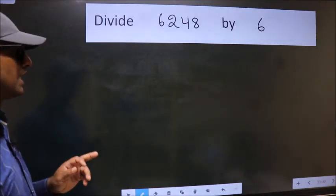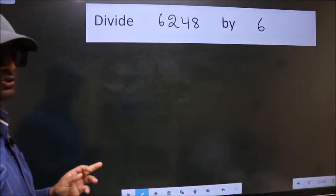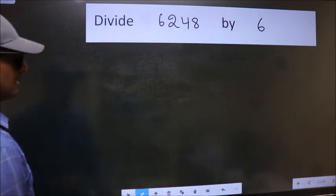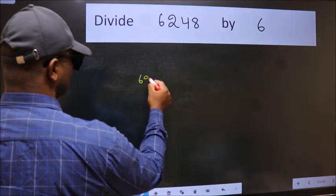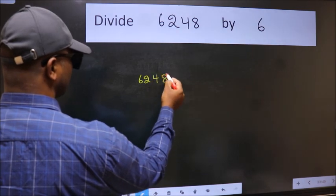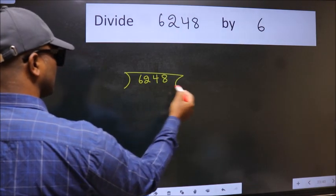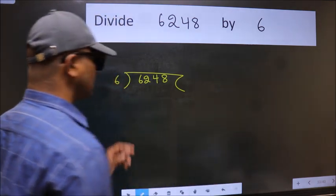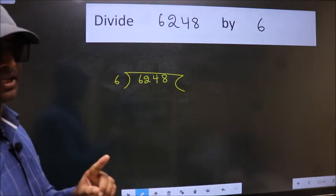Divide 6248 by 6. To do this division, we should frame it in this way. 6248 here, 6 here. This is your step 1.